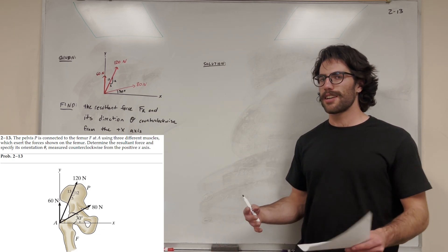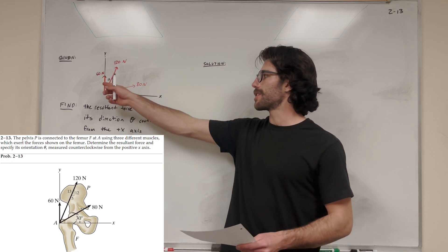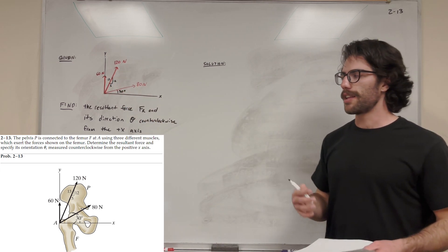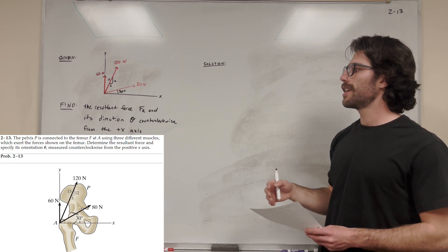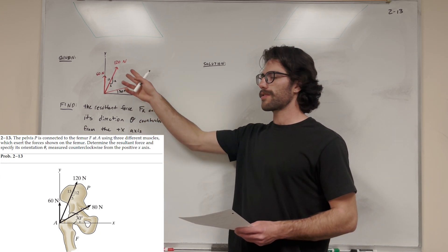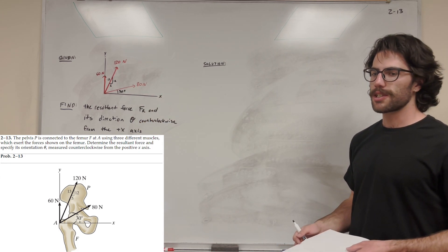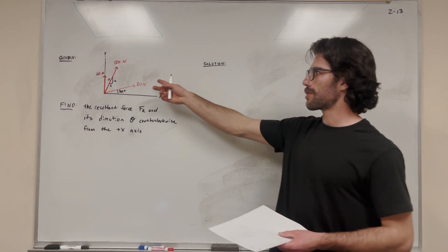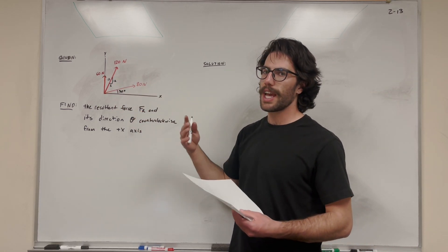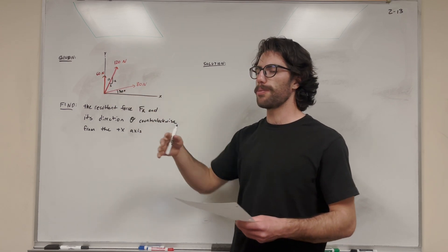So we have this femur attached to a pelvis, and it says that there's three forces attached to it, basically. Those are the three vectors there. And we want to find the resultant force of these three vectors and its direction theta counterclockwise from the positive x-axis. So let's go ahead and solve it. We're doing vector addition. Basically, we want to add these three forces to get force resultant. But we can't just add them up because they're vectors and they're all pointing in different directions.